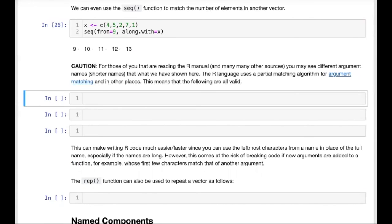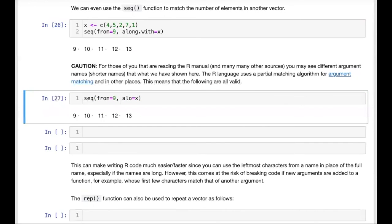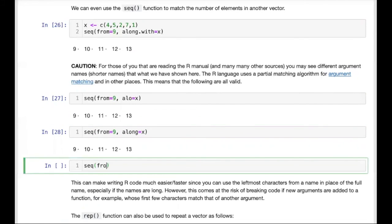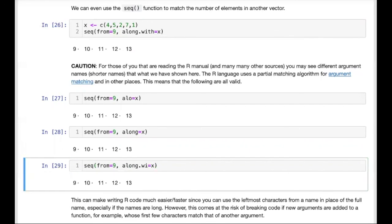So if I repeat the last example, we actually don't have to fully type out along.width. We can instead use only the first three characters, ALO, and you will see that we get the same output, no errors. I can even add a few more characters, and this still works. Or even more, and this will still work exactly the same.